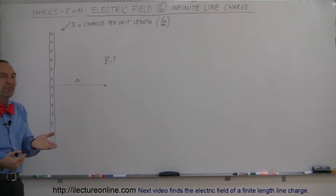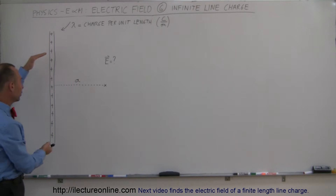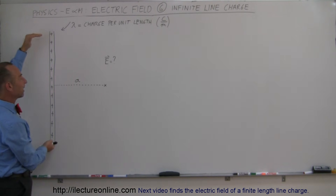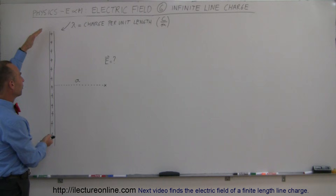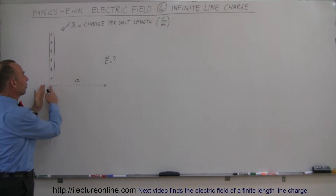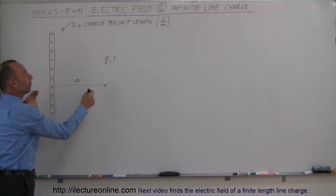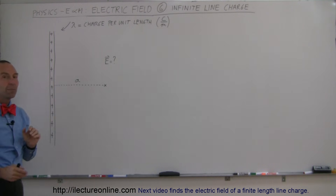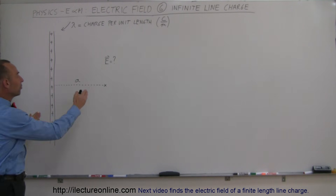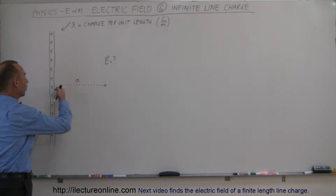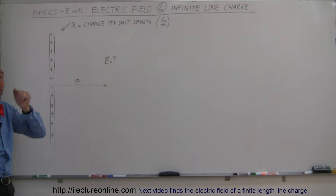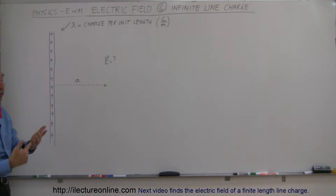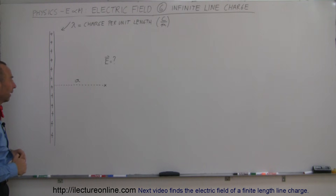Later on, we'll do an example where the line will not be infinitely long, where there'll be a finite distance that's relatively small compared to the distance to the point of interest. But if the point of interest is fairly close to the line of charge, we can just assume it's an infinite line of charge, and we're going to go ahead and figure out the result of that.